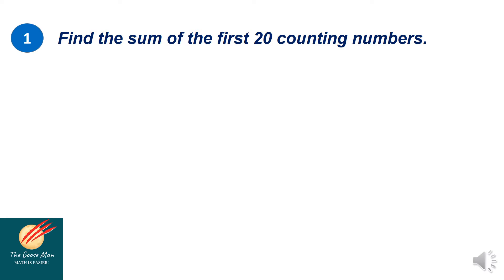Let us consider problem number 1: find the sum of the first 20 counting numbers. Counting numbers are 1, 2, 3, and so on. Identifying the given: a sub 1 equals 1, a sub n equals 20, and n equals 20. We want to find the sum S sub n.